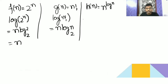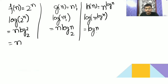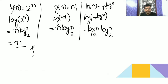For Hn, if you take the log it is going to be log of n to the power log n, so log n base 2 times log n base 2, giving (log n)^2. Now, can I say that Fn is big O of Gn? This is smaller than Gn.